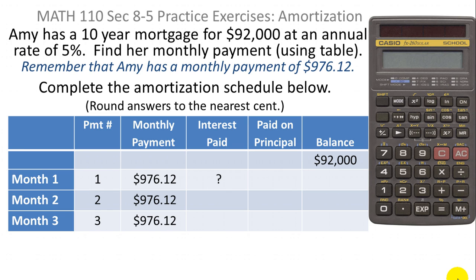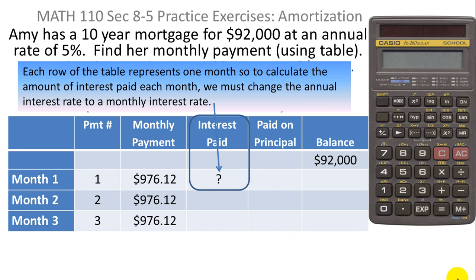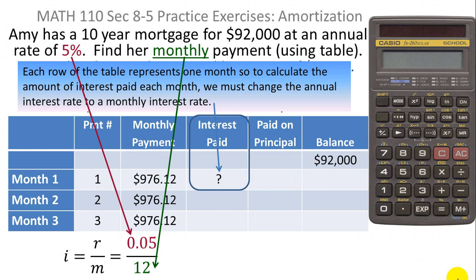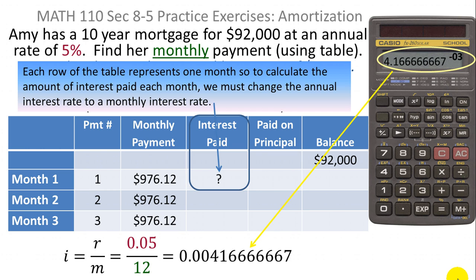Now we find the amount of interest paid. Every row in the table represents a month, so we have to convert the annual interest rate of 5% to a monthly rate. We take the annual rate r and divide by m, the number of compounding periods per year. For monthly payments, m is 12. So we take 0.05 divided by 12, which equals approximately 4.1667 × 10⁻³, or 0.0041667. Moving the decimal point three places left gives us our monthly interest rate.